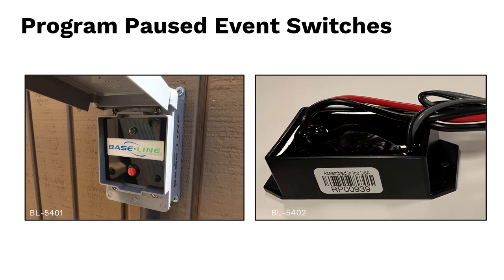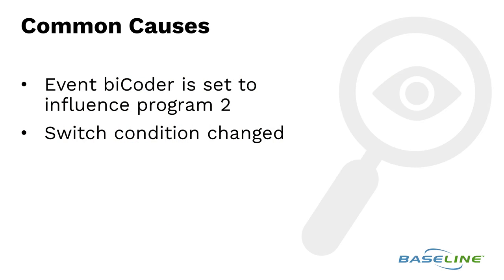Event bicoders, also called event switches, allow dry contact switches to influence a program — starting them, stopping them, or pausing them. A BL5401, or coach's button, is one type of event bicoder that has a built-in switch. A BL5402 is another type that allows nearly any dry contact switch to influence the bicoder and a program.